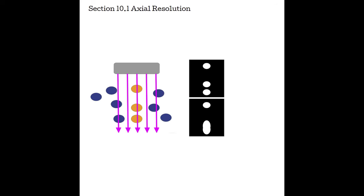An accurate display of these reflectors would show three separate reflectors. When reflectors are displayed appropriately, we call them resolved. An inaccurate display would show the reflectors incorrectly — too few and incorrect size. When reflectors are displayed incorrectly, we call them unresolved. In this example, we can see a transducer face, and these pink arrows represent beams coming out of the transducer face heading into the body. The orange reflectors are parallel with the sound beam, sitting in front of and in back of one another. How accurately we display these is determined by the axial resolution of the machine and transducer.